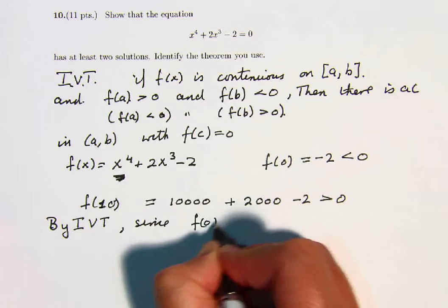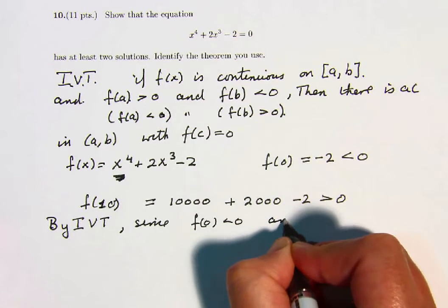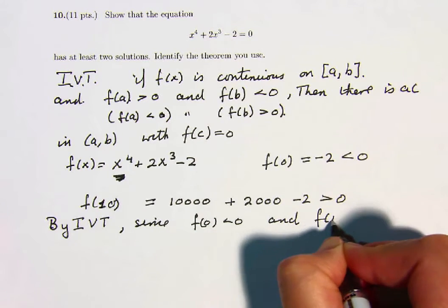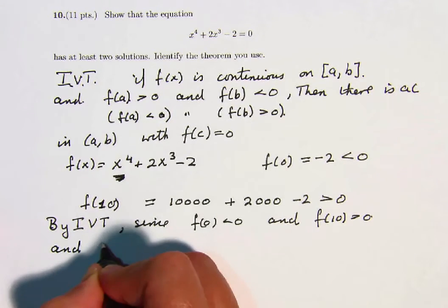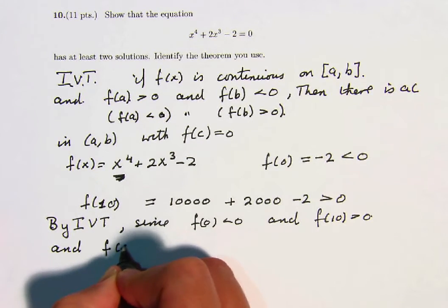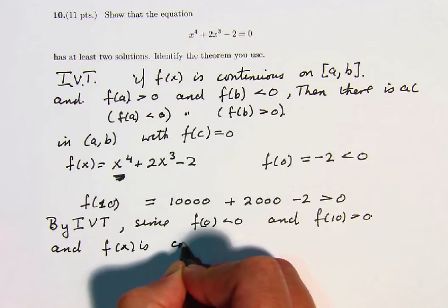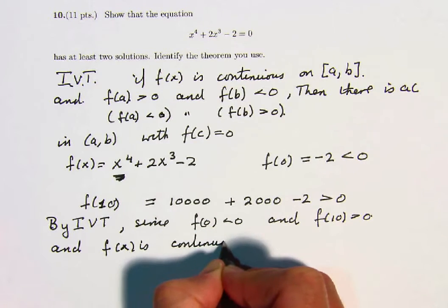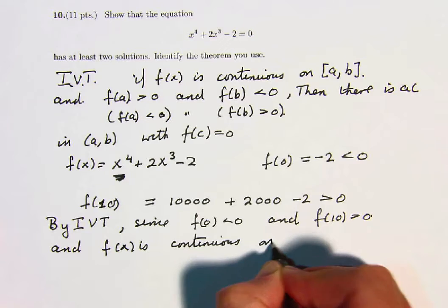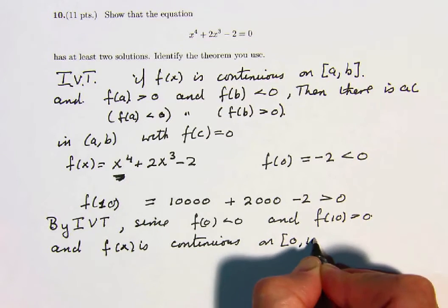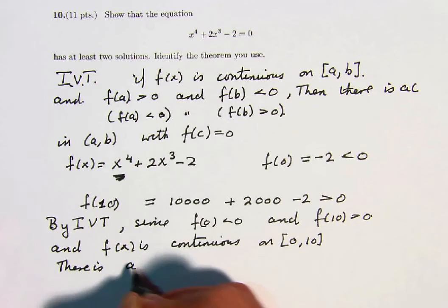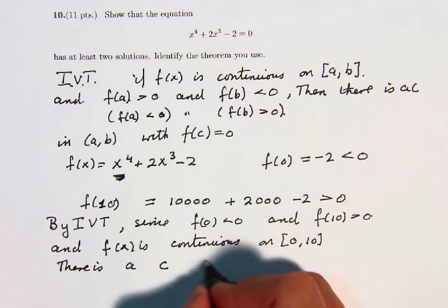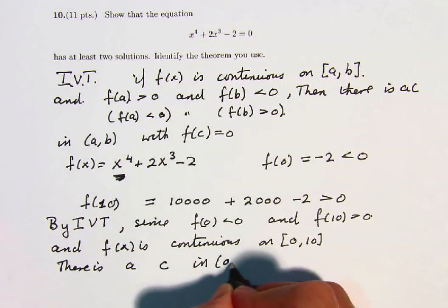So now by the Intermediate Value Theorem, since f of 0 is less than 0 and f of 10 is greater than 0, and f of x is continuous on that closed interval, there is some value c between 0 and 10,